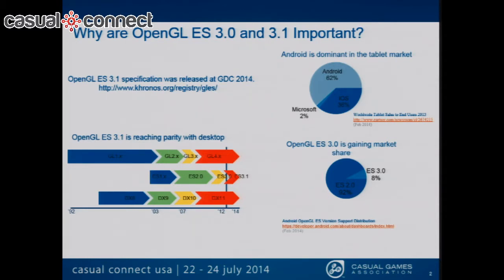Android is dominant in the tablet market with 62% market share and iOS in second at 36%. Both support 3.0. I don't know if they've passed conformance for 3.1 yet with the iOS devices. OpenGL ES 3.0 is gaining market share, mostly in the high-end tablets, which are becoming increasingly popular. I think we're going to start seeing a lot more of those in the coming years.